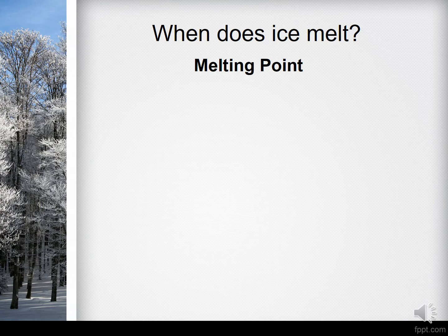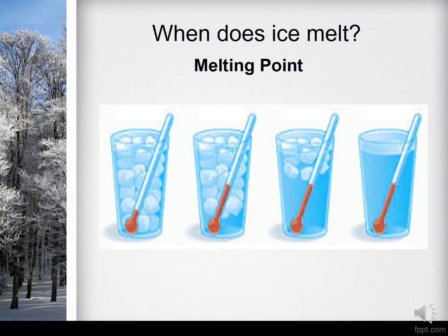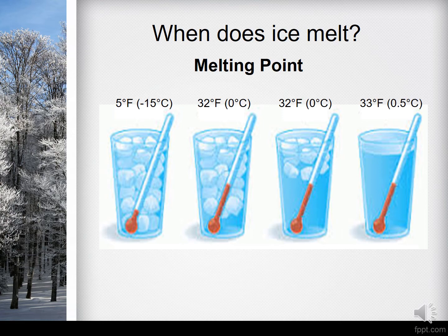Now take a look at these glasses. The first glass is filled with ice cubes at a temperature of 5 degrees Fahrenheit, or negative 15 degrees Celsius. After some time the ice begins to melt because it is adapting to the room temperature. We can assume that the room temperature is not cold enough to keep up with the temperature of the ice cubes.